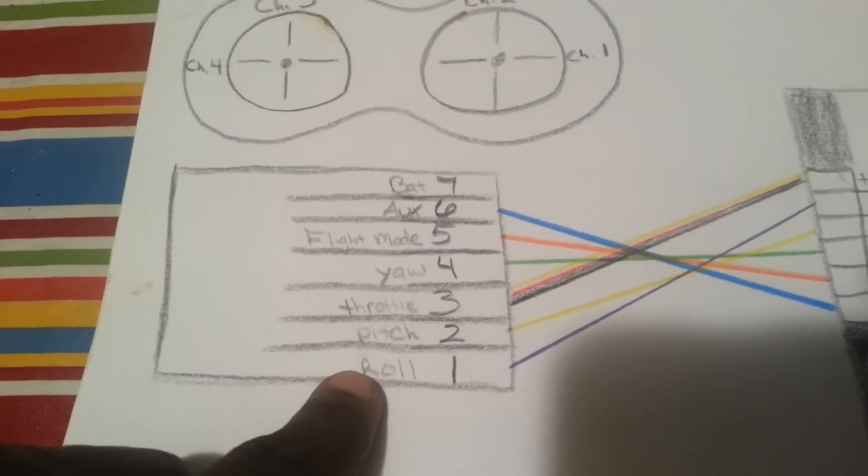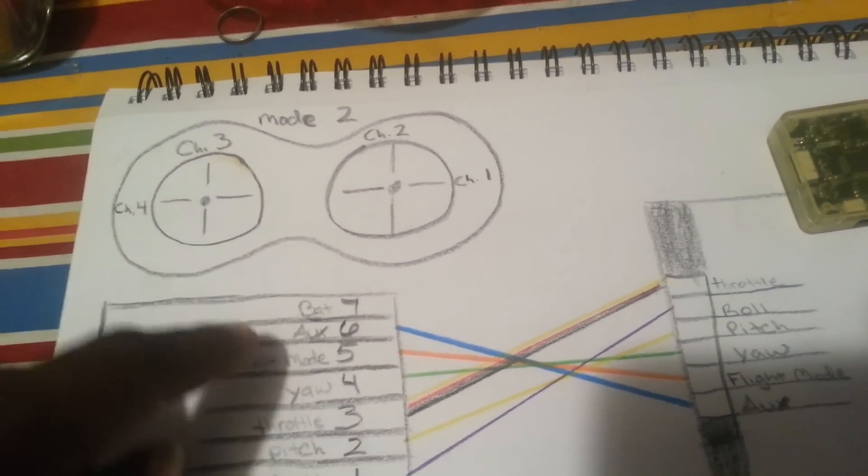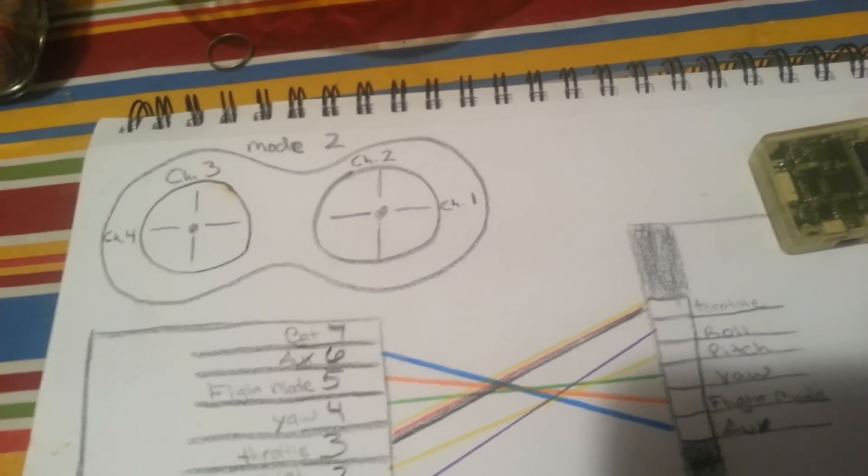I label all the pins on the receiver to correspond to the channels on the flight, I mean, on my transmitter. So channel 1 being roll, channel 2 being pitch, channel 3 being throttle, channel 4 being yaw, 5 is your flight mode, whichever switch you set that up for, and 6 is your auxiliary also, whichever switch you set it up for.